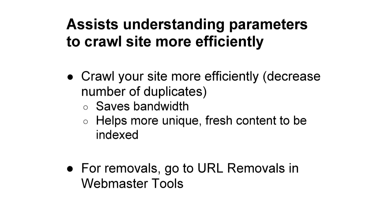Essentially, with your input in URL parameters, it helps us to understand your site better so we can crawl more efficiently. By crawling more efficiently, we don't crawl as many duplicates, and that will save you bandwidth and helps us to focus on your unique content rather than crawling duplicative information repeatedly. But if you want URLs removed, you can go to URL removals in Webmaster Tools. The URL parameters feature is to crawl more efficiently — it's not about removals or explicit robots.txt disallowing.